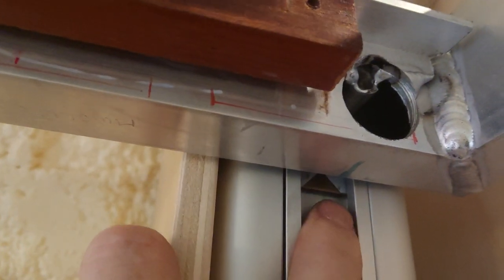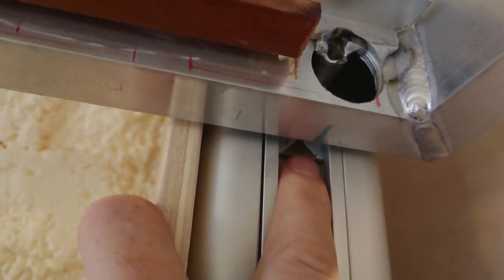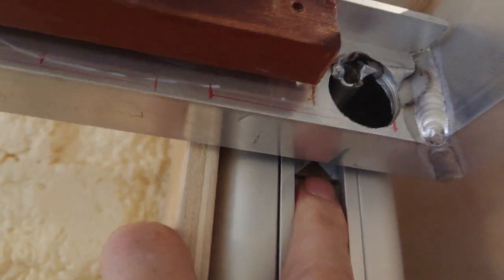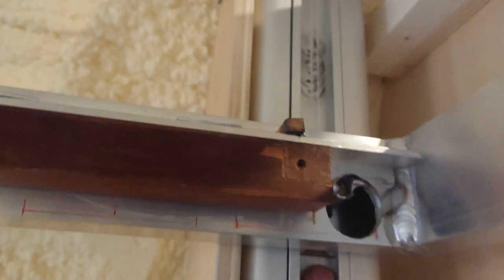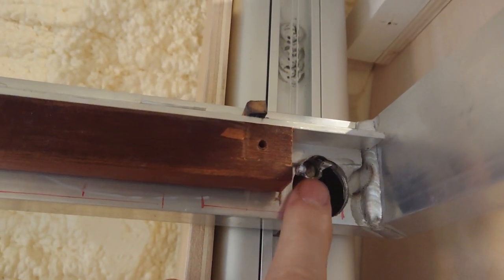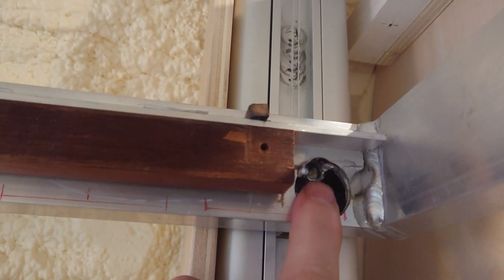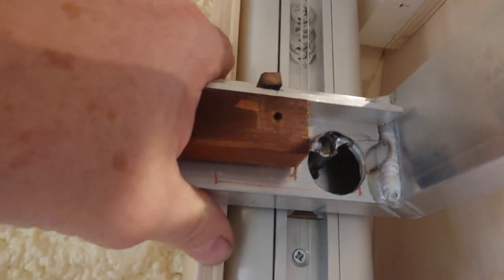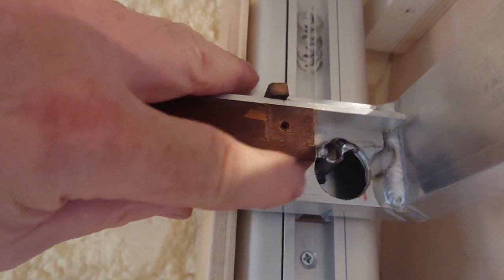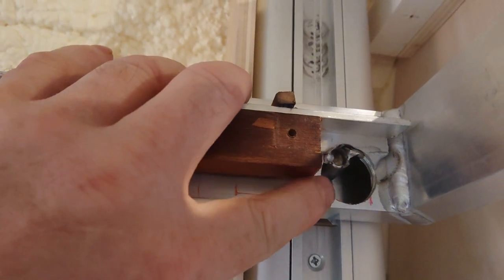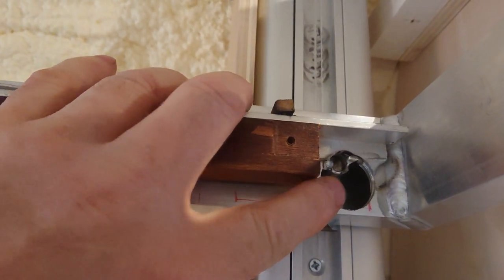So that stainless steel pin is welded to this stainless steel glider and what that allows is any sideways movement to be taken up by the fact that it's not threaded, it's not fixed. So that pin slides inside the aluminium tube.